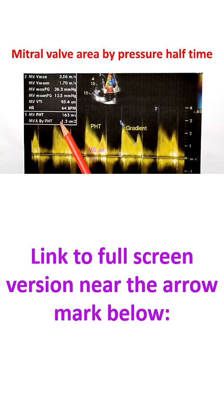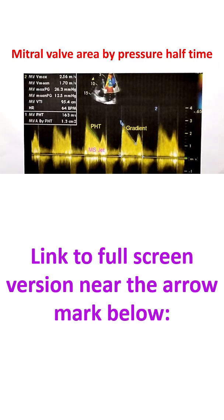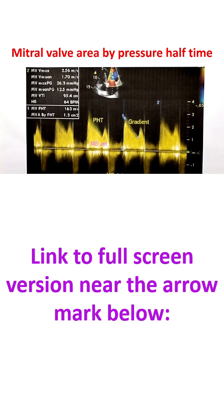Here the measured pressure half time is 163 ms and the corresponding mitral valve area calculated by the machine is 1.3 square cm. A pressure half time of 220 ms corresponds to 1 square cm of mitral valve area. If you divide 220 by the observed pressure half time, you get the mitral valve area.